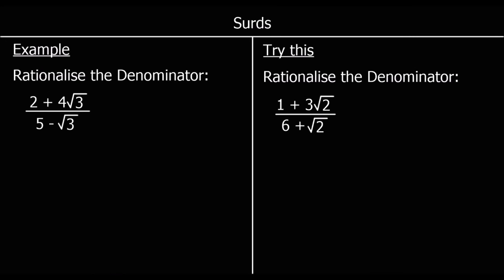One more example — very similar to the last one, just with a more complicated numerator. We've got 2 plus 4 root 3 over 5 minus root 3. The process to rationalise the denominator is the same as the last question. The denominator is 5 minus root 3, so we're going to multiply top and bottom by 5 plus root 3. We'll have double brackets on both the top and bottom to expand.